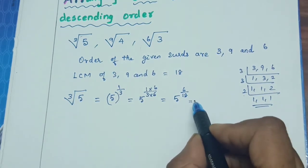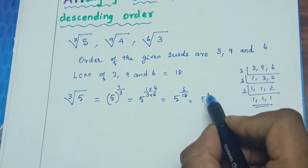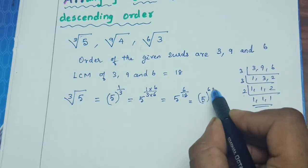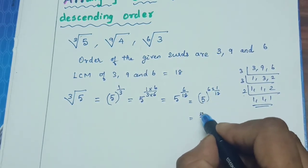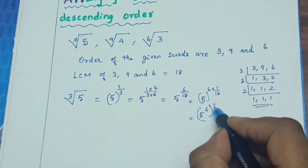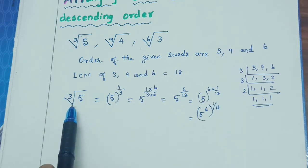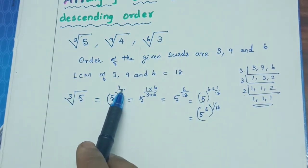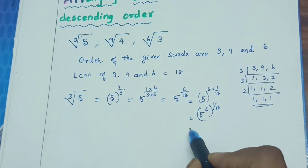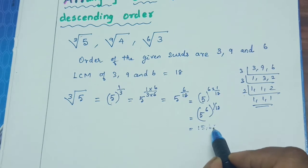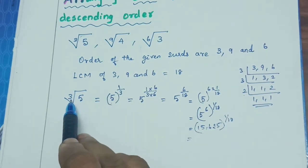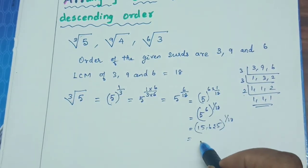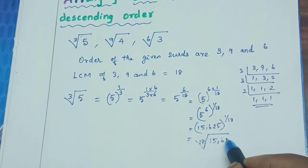Now rewrite 5 to the power 6 by 18 as 5 to the power 6, the whole raised to 1 by 18. So we take the power of 6 inside: 5 to the power 6 is 15,625. This becomes 15,625 to the power 1 by 18, which is the 18th root of 15,625. So cube root of 5 is converted to the 18th root of 15,625.